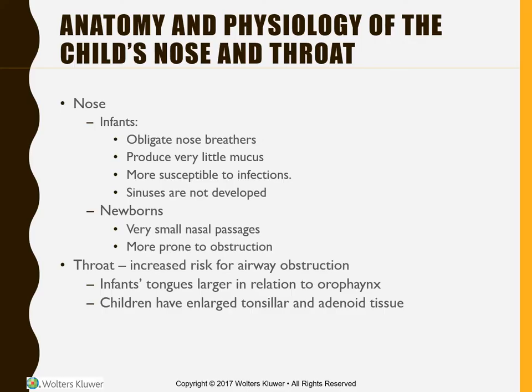As we look at the anatomy and physiology of the child's nose and throat, we can focus on the nose first. Infants' noses are much smaller than that of an adult. They are obligatory nose breathers. They don't really produce a lot of mucus unless they have an infection, but they are more susceptible to those infections. When they do produce a lot of mucus, it's really obstructing those nares. Their sinuses are not developed.